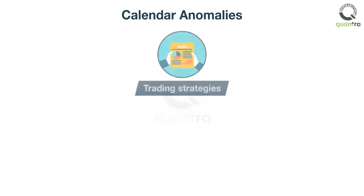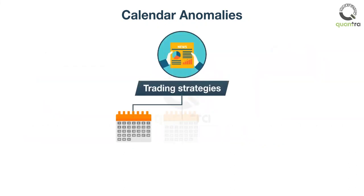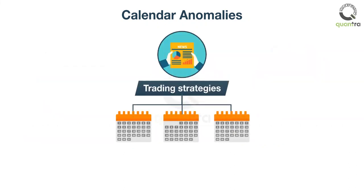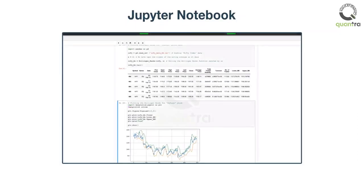We will show that simple trading strategies can be built on each calendar anomaly, and the implementation for each of these strategies. Trading codes are written in the Jupyter Notebook, and these codes can be downloaded from the end of the course.